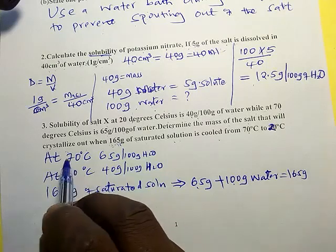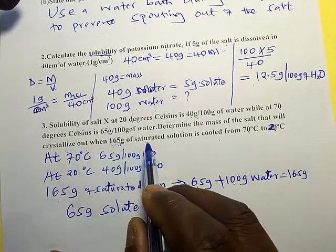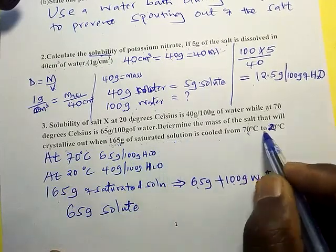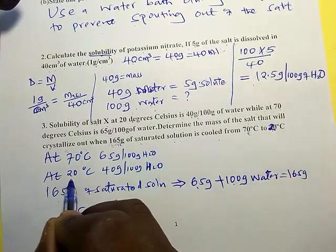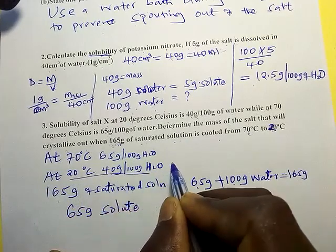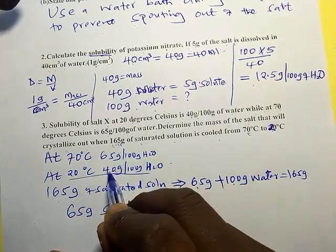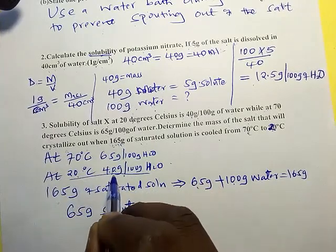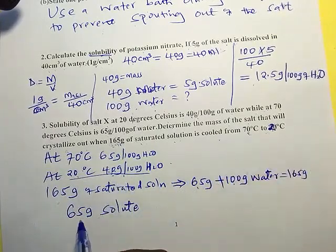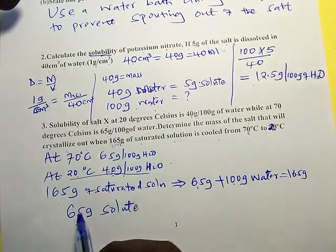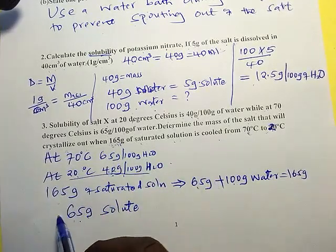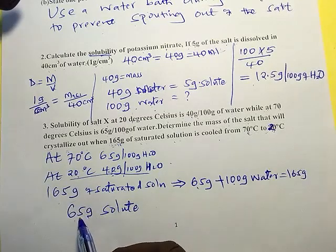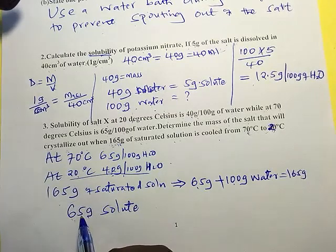Now we want to know the crystals that will be formed when the solution is cooled from 70 to 20. But we know the solubility at 20 is 40. The solubility at 20 degrees Celsius is 40. When cooled to 20, our mass of the mixture is now 65 grams.